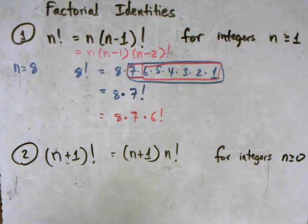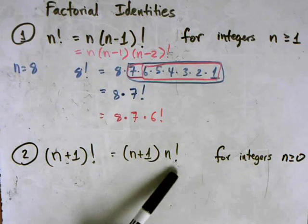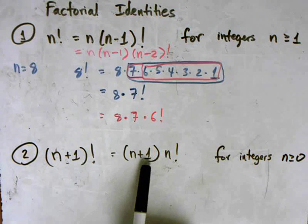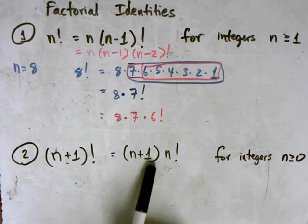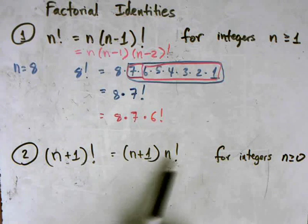And it's saying that n plus 1 factorial is really n plus 1 times n factorial. In other words, subtracting 1 from this original term here gives me the original term and 1 less than that factorial.